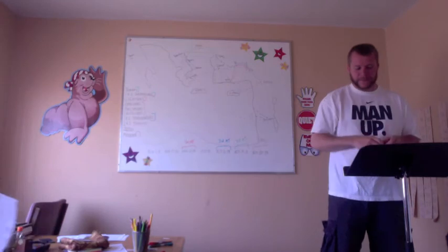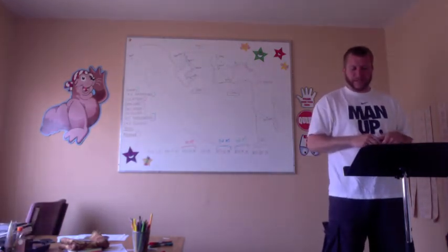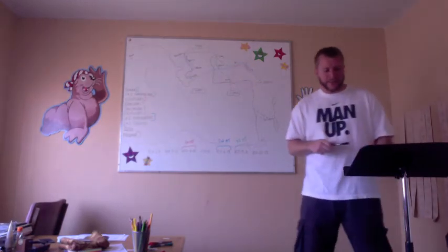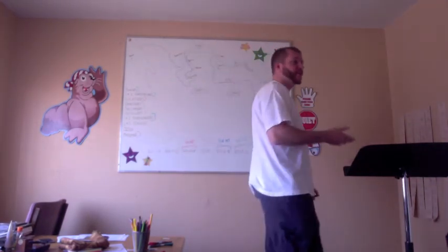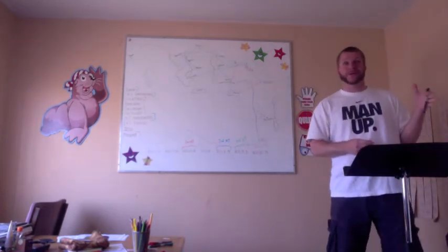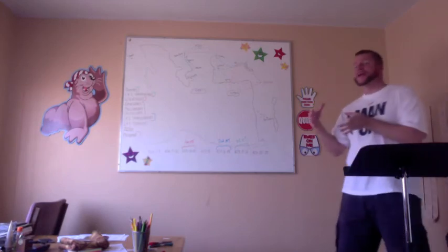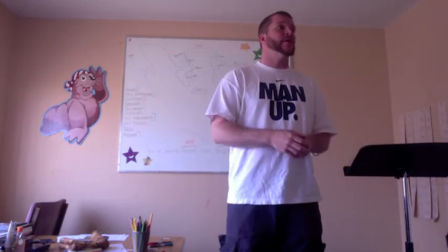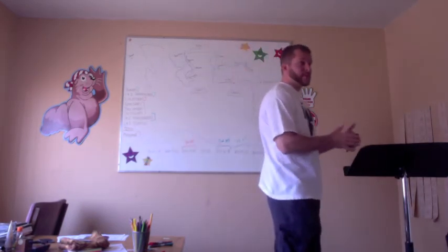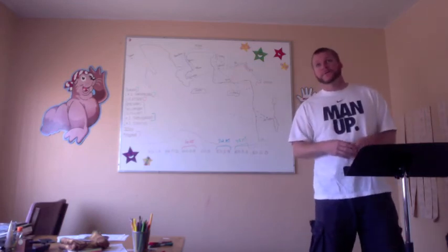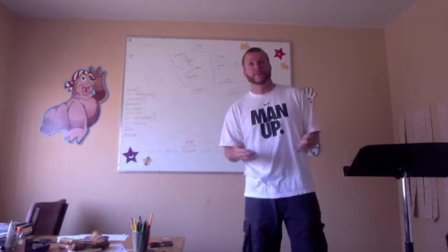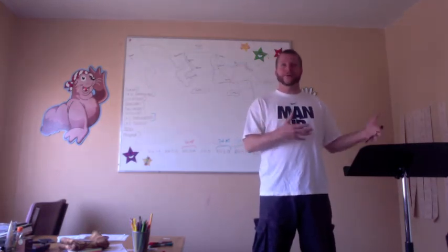Number 18: the general epistles are so named because they are not addressed to specific audiences — but they might better be called non-Pauline epistles. These include Hebrews, James, 1 and 2 Peter, 1, 2, and 3 John, and Jude. With the Pauline epistles, the book titles are named after whom Paul was writing to; with the general epistles, they're typically named after the author. First and 2 Peter were written by Peter; 1, 2, and 3 John were written by John. The exception is Hebrews — scholars are uncertain, and there is no clear identified author.